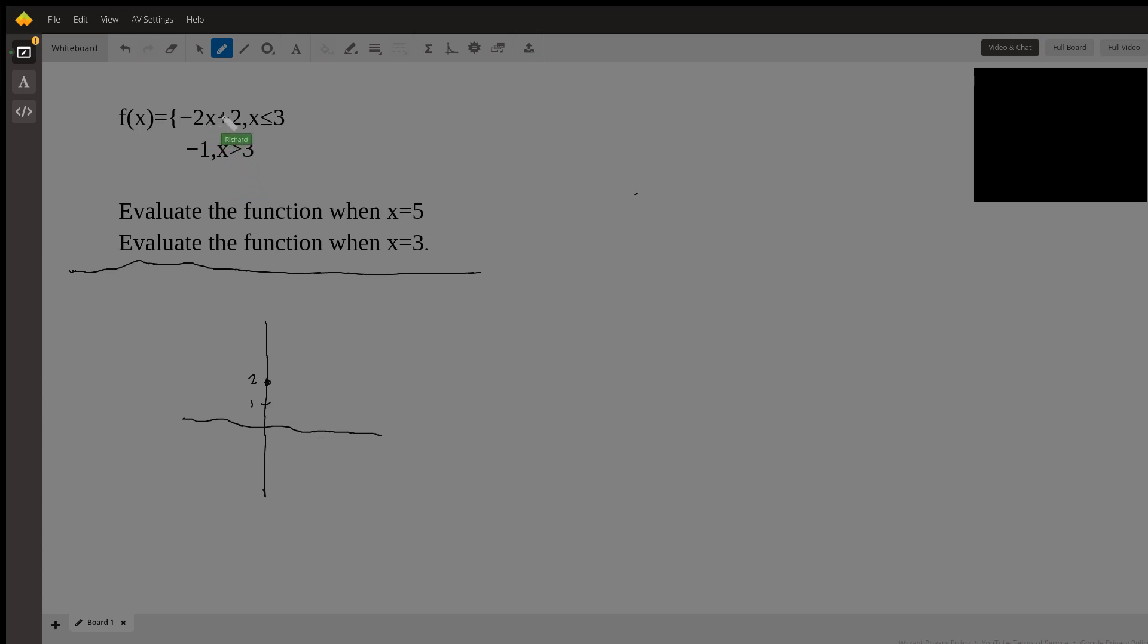And when y is zero we're going to get, let's see, y equals zero which is equal to negative 2x plus 2. So negative 2 equals negative 2x, so x is going to be 1. So when x is 1, y is 0, so here's a 1.